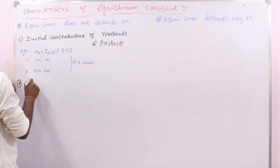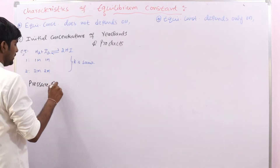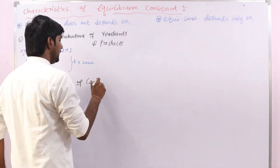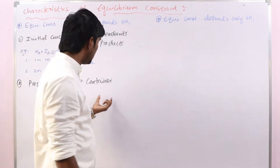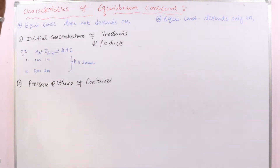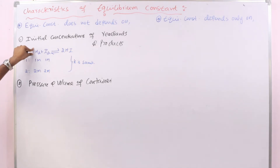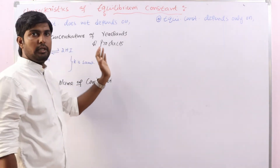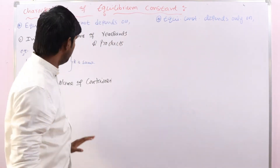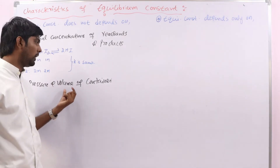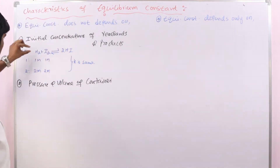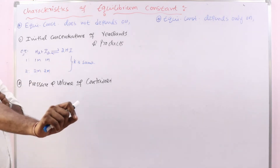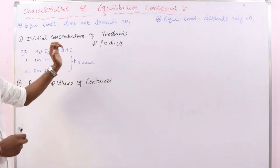The second factor is pressure and volume of the container. Whatever the pressure or volume of the container — suppose this reaction is carried out in a 5-liter container and a 10-liter container at the same temperature — in both cases the equilibrium constant value is the same. There is no effect of pressure and volume on the numerical value of K. For a particular chemical reaction, K value is fixed as long as we maintain constant temperature.